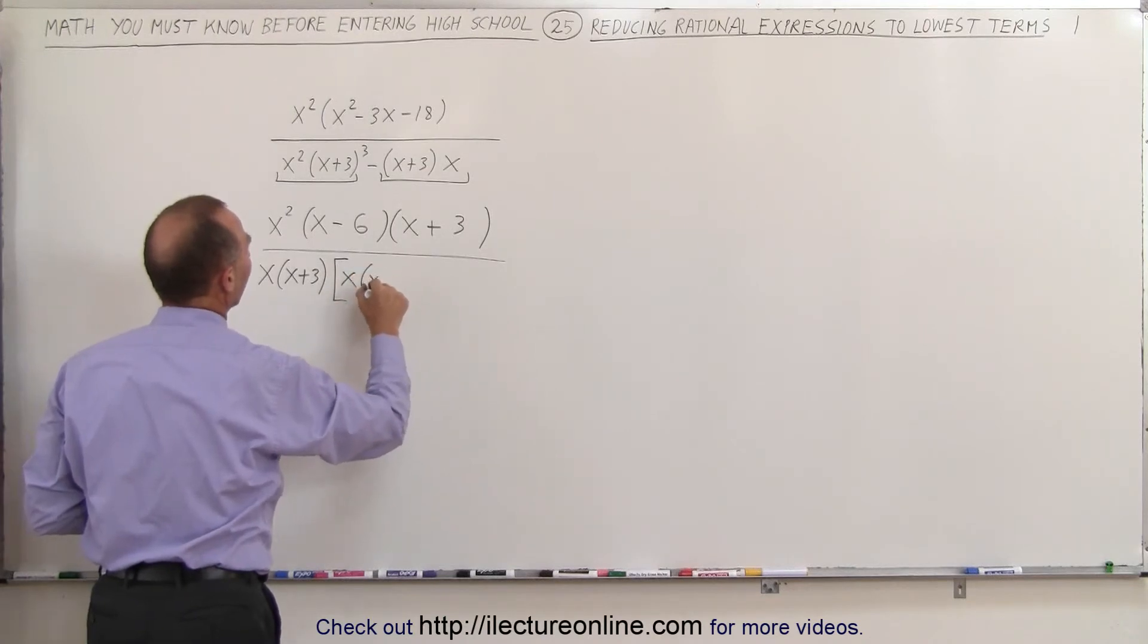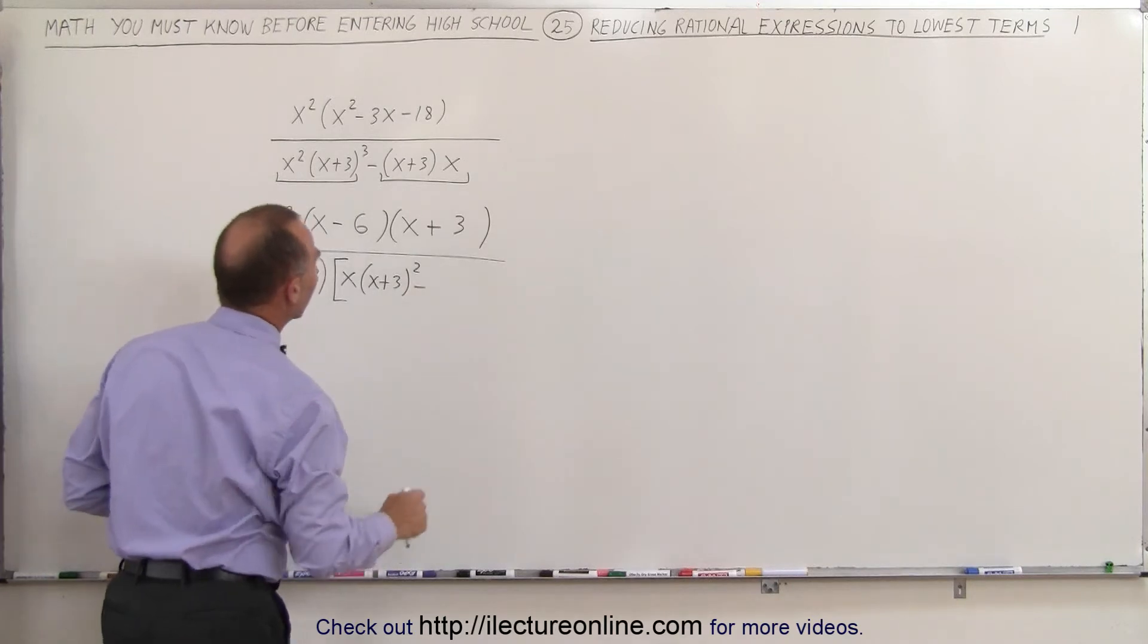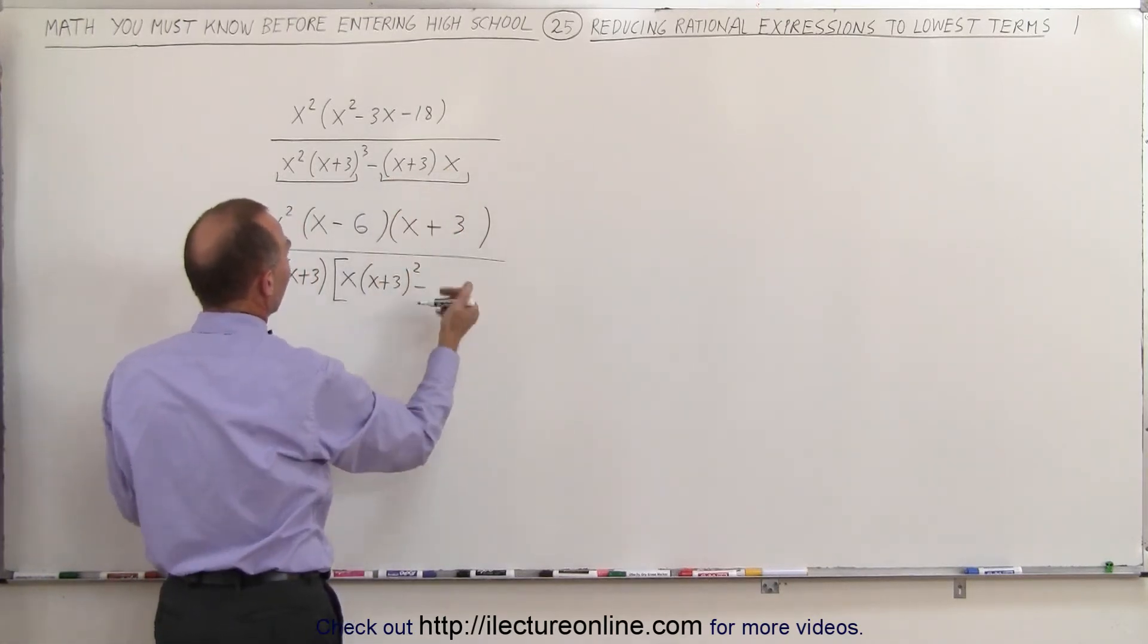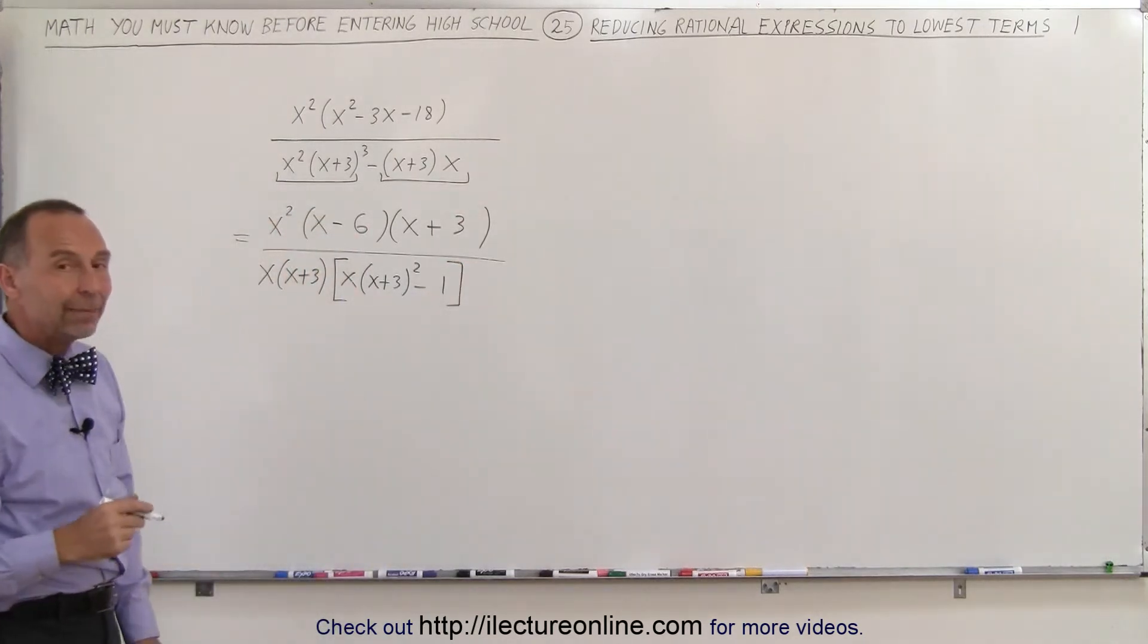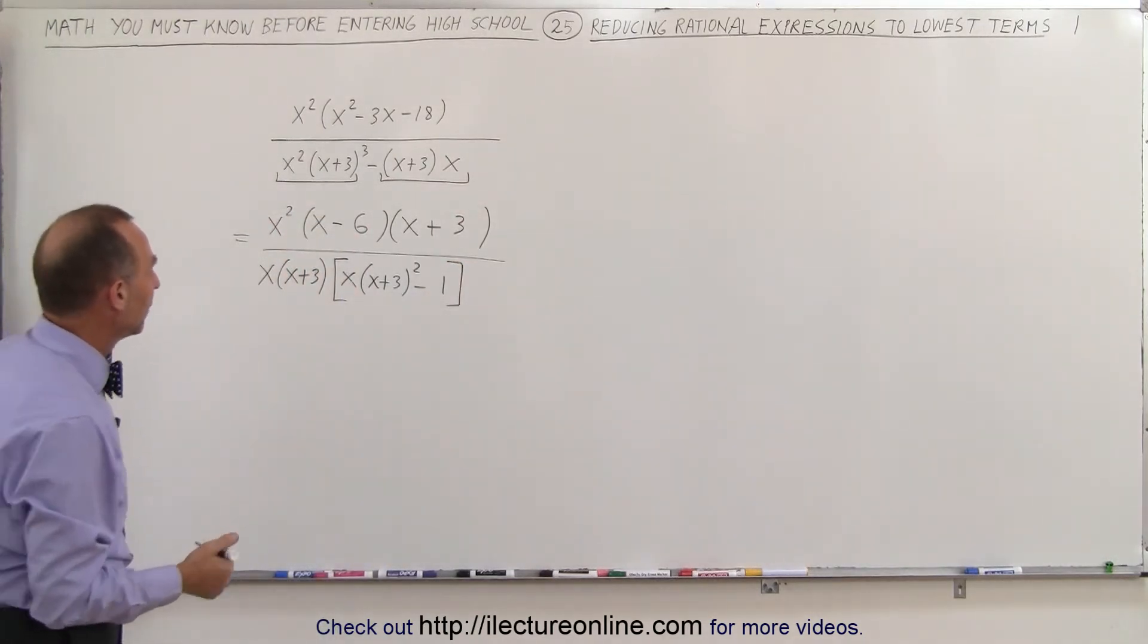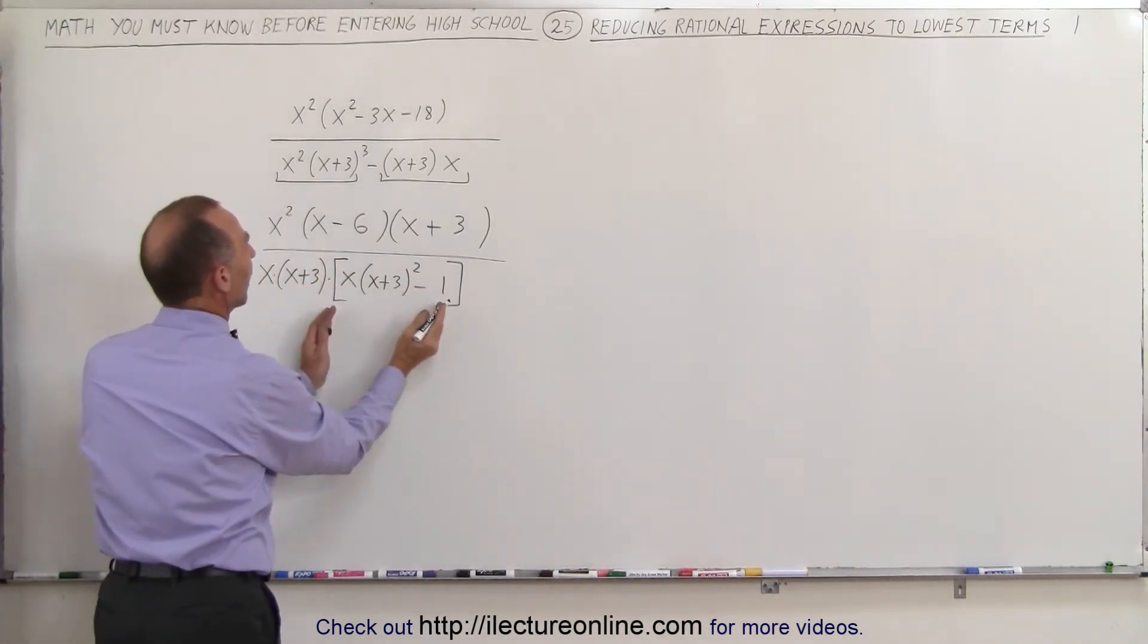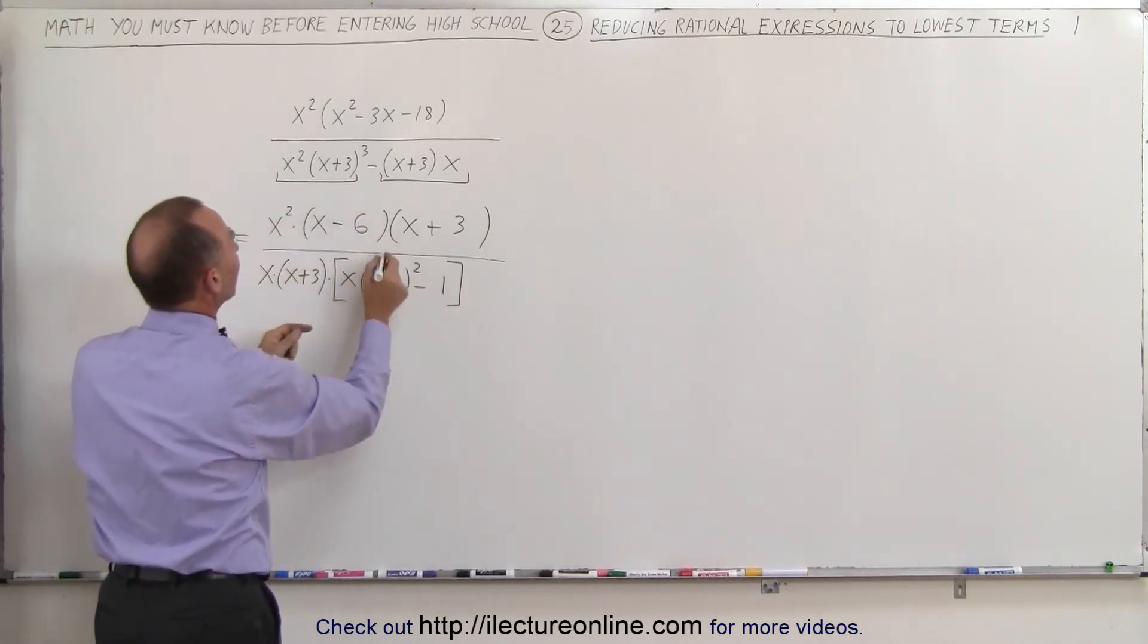So this gives me x times x plus 3 squared minus, and here notice that when I factor out an x, and x plus 3, all I have left is a 1. Now notice that I can begin to simplify already, because here I have an x times an x plus 3, times this quantity right here, and here I have an x squared times an x minus 6, times an x plus 3.